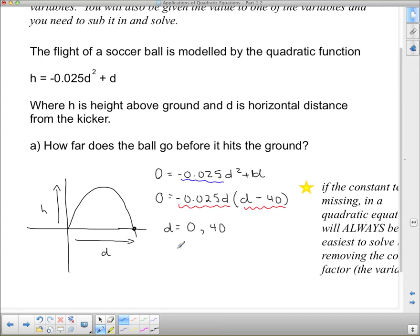Now, which one of these are inadmissible? Well, this 0 is inadmissible. This stands for where the ball was when it was kicked, not how far it went. So this is our answer. And so we would say, therefore, the ball went 40 meters before hitting the ground.